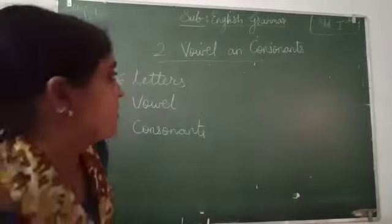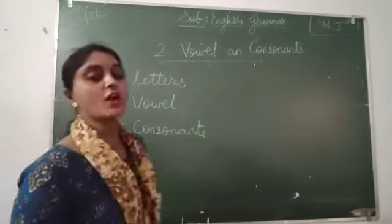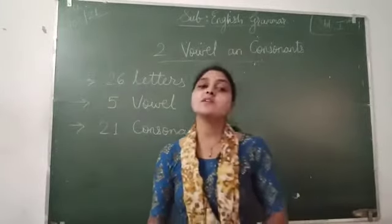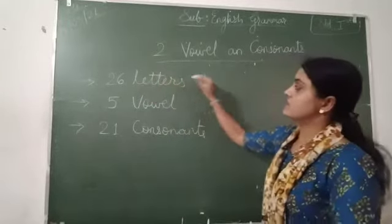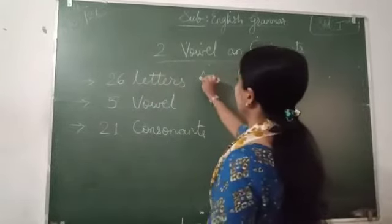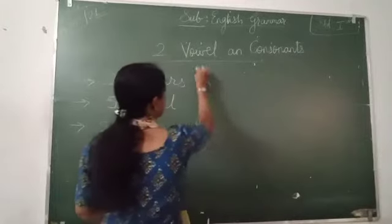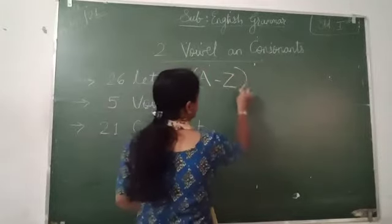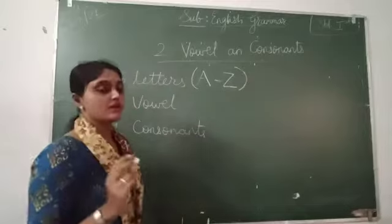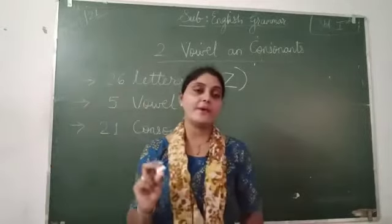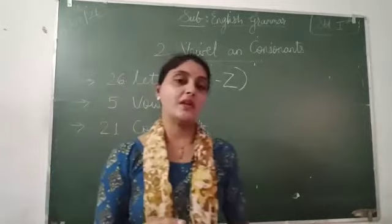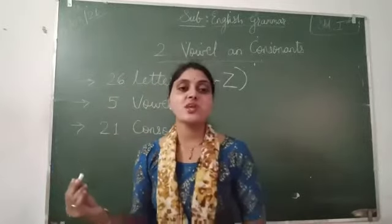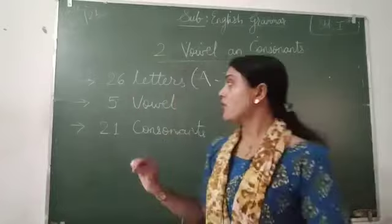Now see, in English there are 26 letters. 26 letters from A to Z. In small letters and capital letters, we can write this alphabet in small letters and capital letters also. Here we are going to do this chapter.